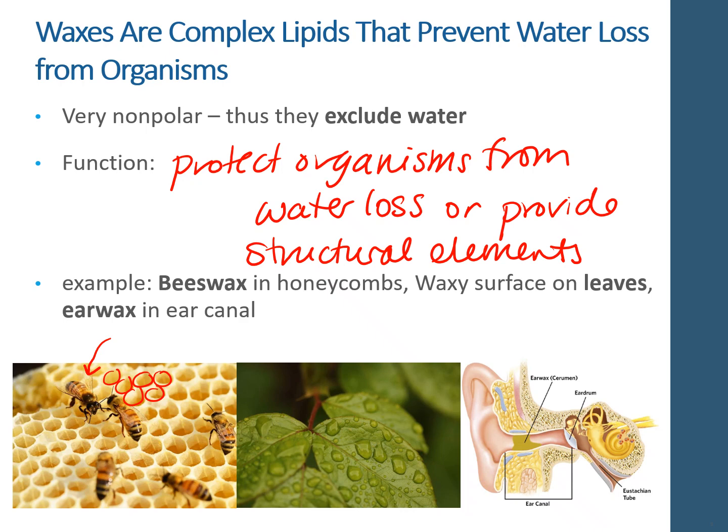The outer covering of many plants, also called the cuticle, is covered in waxy substances that help to repel water and also reduce water loss — they can keep water in and also keep water out. Another example is earwax, which occurs in your ear canal. That waxy buildup helps protect your ear from getting too much water in it, from getting dirt and other bacteria in it.